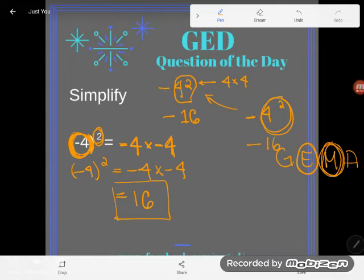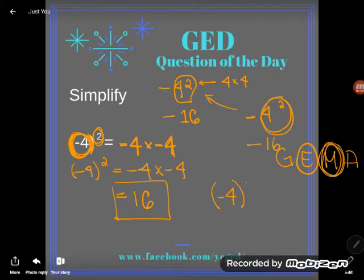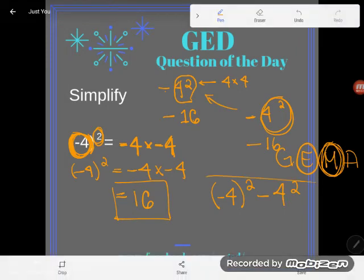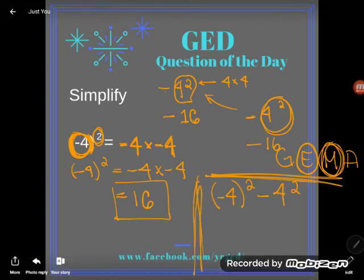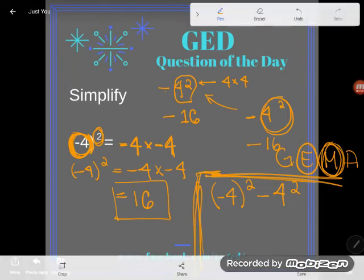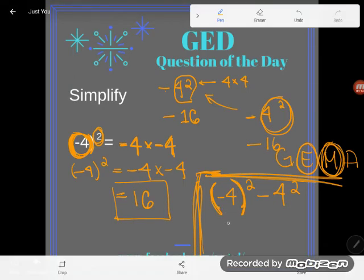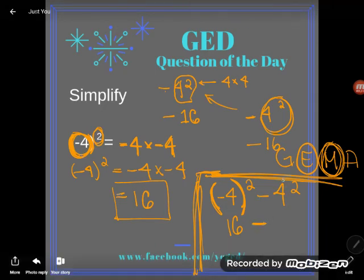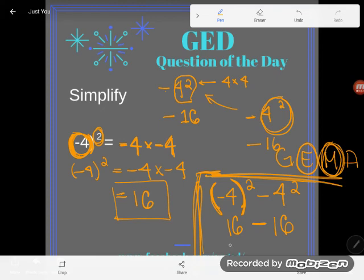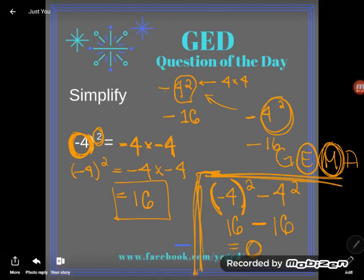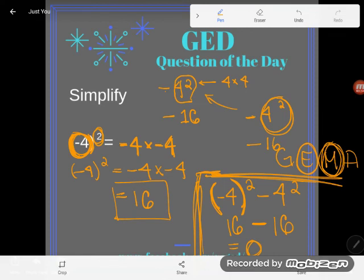You could see both forms on the GED — even in the same problem, like an evaluating expressions problem. For example: negative 4 in parentheses squared gives 16, but negative 4 without parentheses squared means deal with the negative afterwards. 4 squared is 16, then apply the negative — so you'd have 16 minus 16, which equals 0.